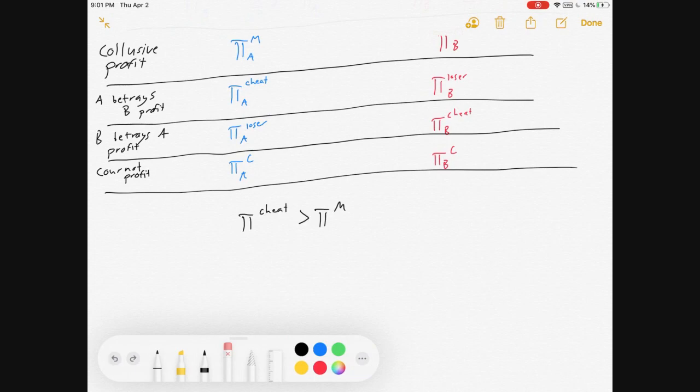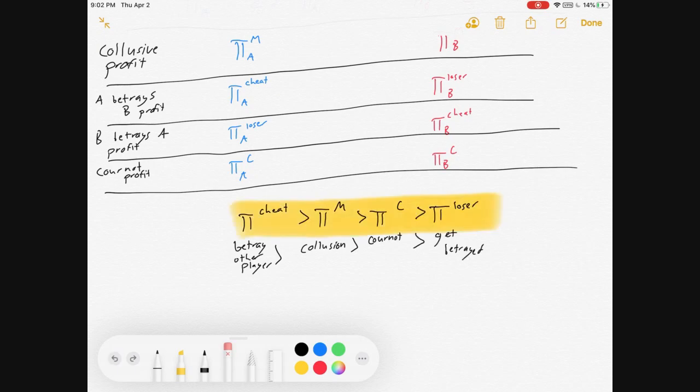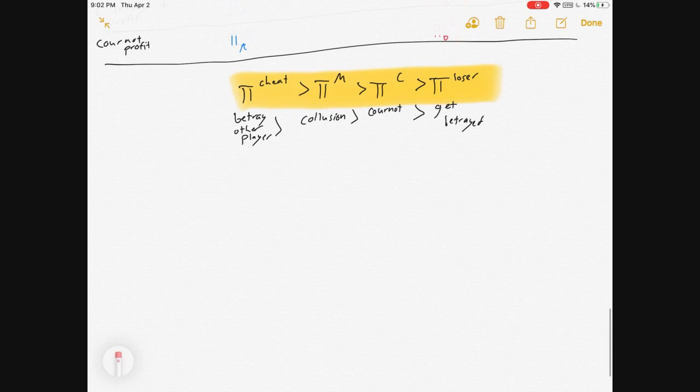So, the profit, if you cheat, is always going to be greater than collusive profit, which is always going to be greater than competition profit, which is always going to be greater than the getting betrayed profit. So, betray the other player has the highest, even more than collusion. Collusion has more than competing via Cournot, and Cournot has more than being betrayed. So, that order is also important to us, because the fact that cheating pays more than colluding, at least for one period, gives us some temptation to want to break away from any collusive behavior.